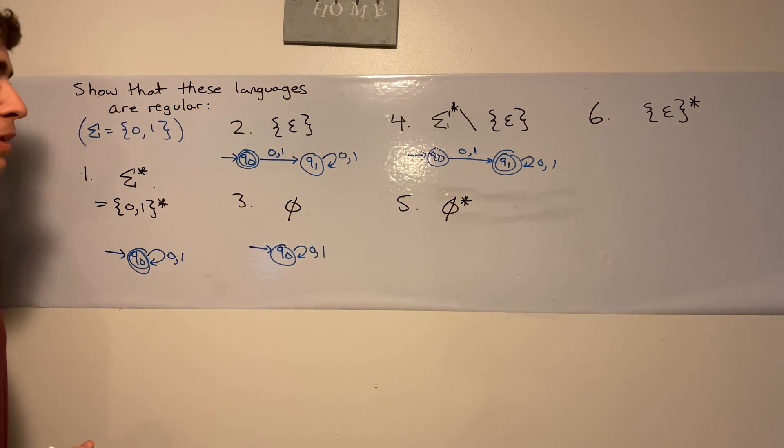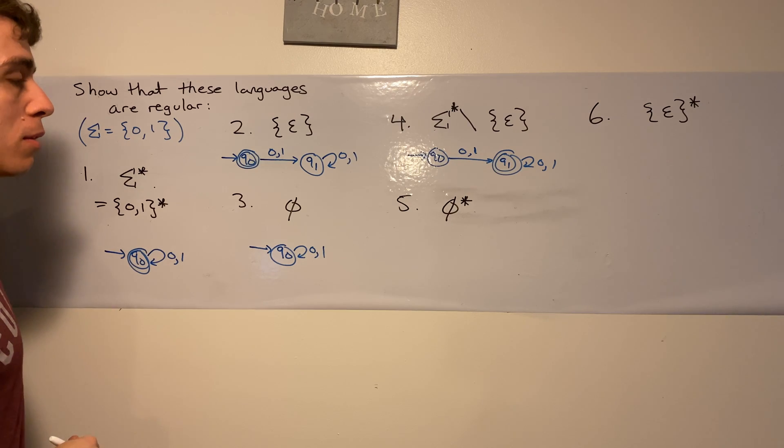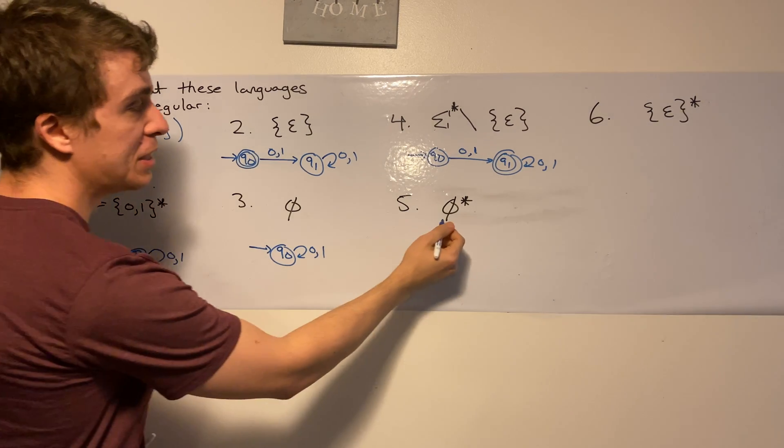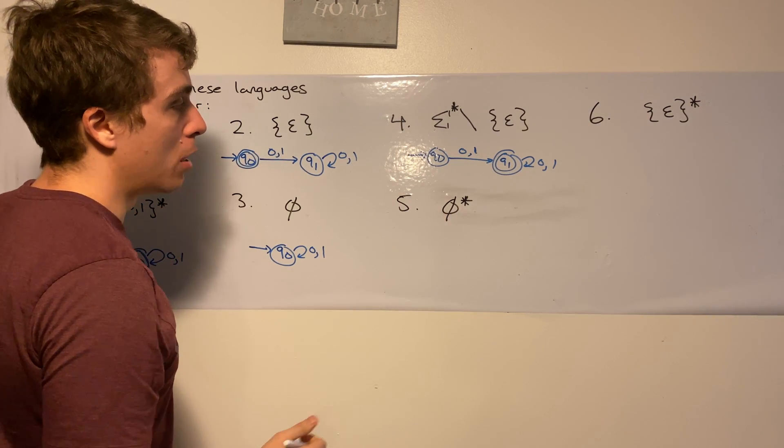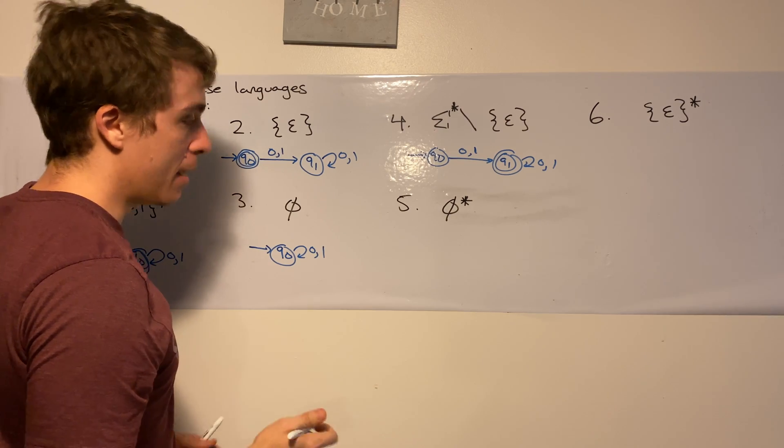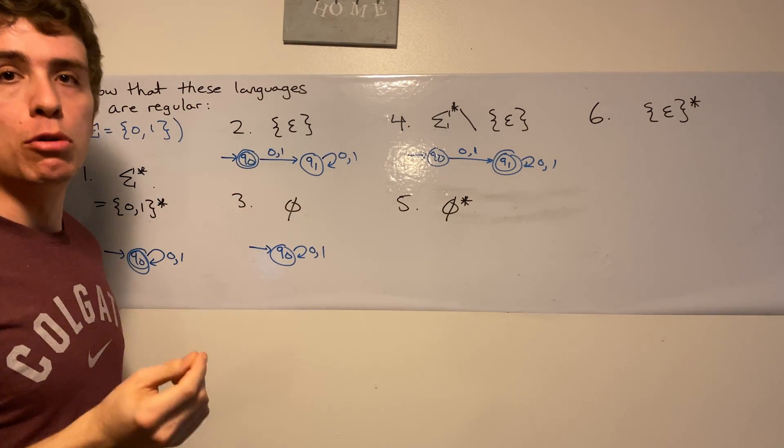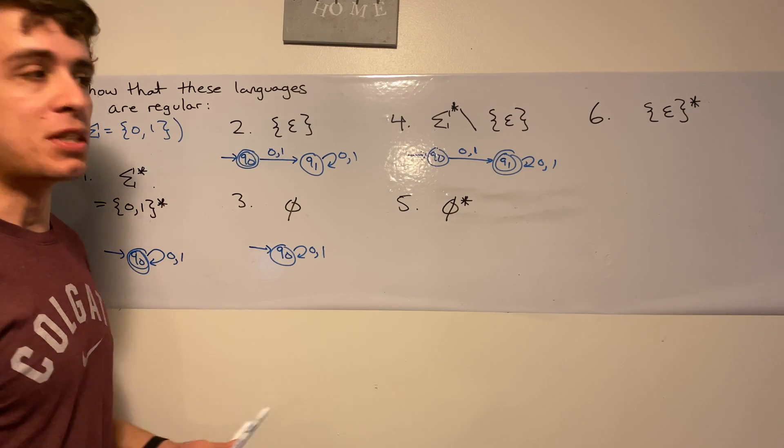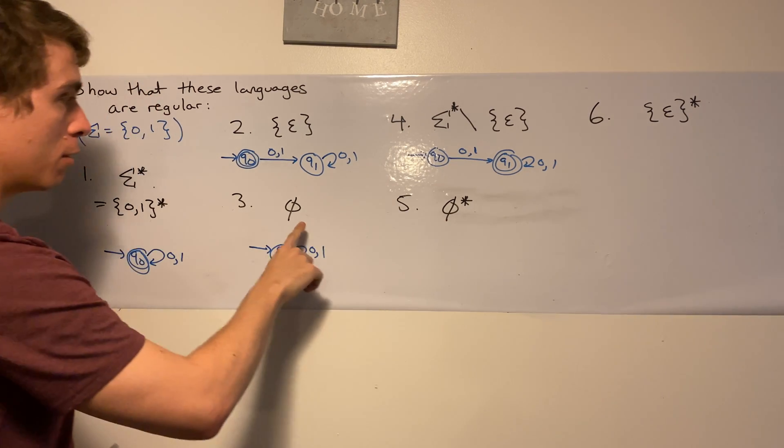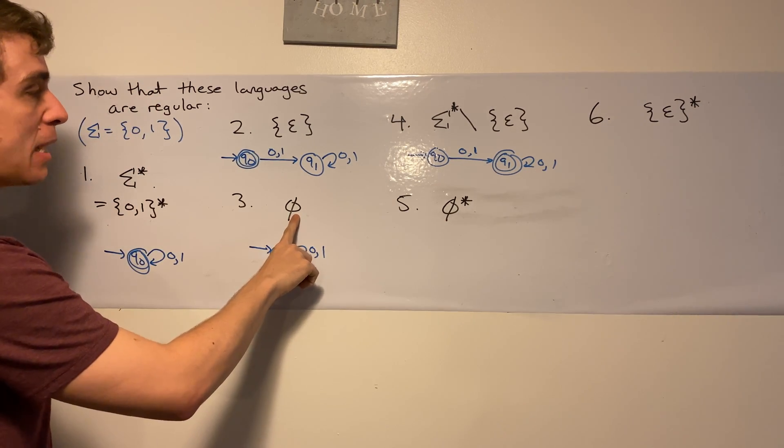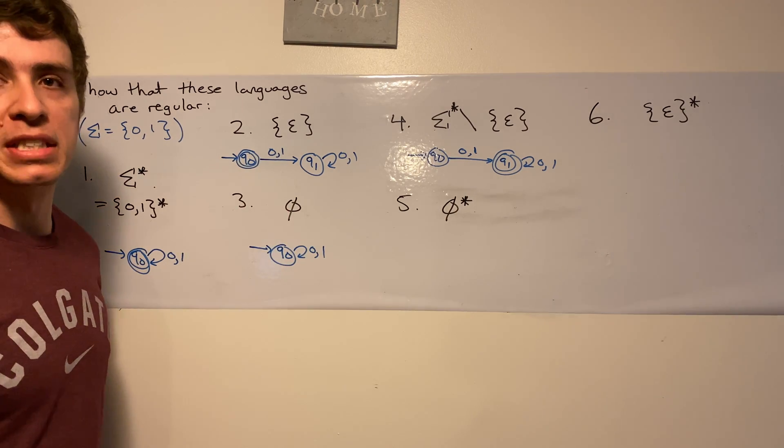So now let's move on to question five. So this is the empty set star. Well, what is that? So remember is always zero or more of something from this set. Well, based on what we saw from here, there's nothing inside the empty set.